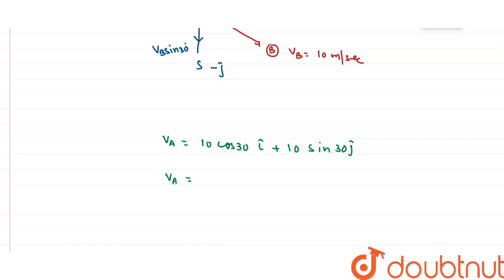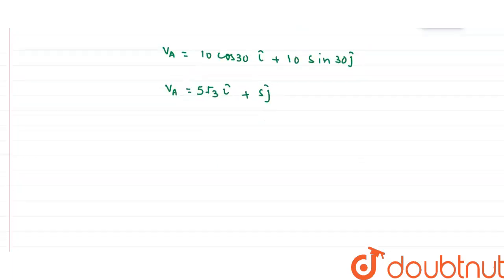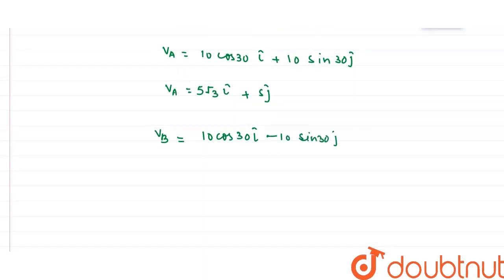So V_A = 10cos30° i-cap + 10sin30° j-cap. Since cos30° = √3/2, this becomes 5√3 i-cap + 5 j-cap. Similarly, V_B = 10cos30° i-cap − 10sin30° j-cap, which gives 5√3 i-cap − 5 j-cap.